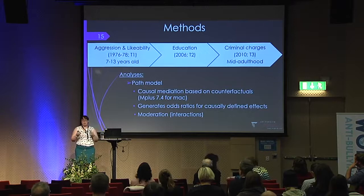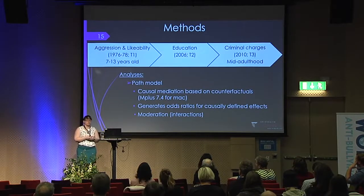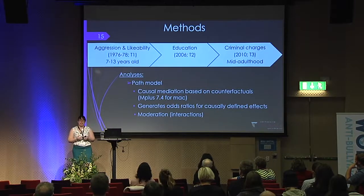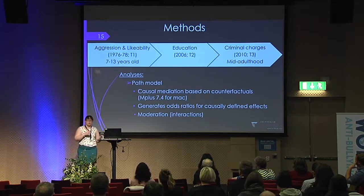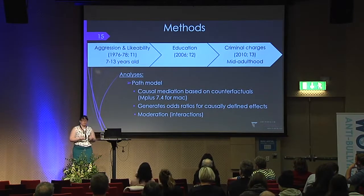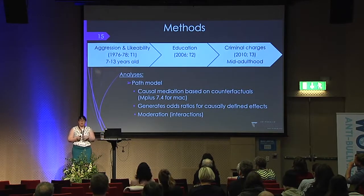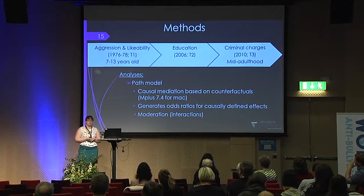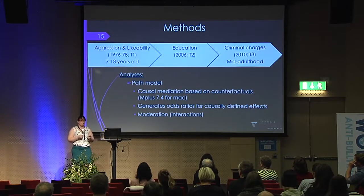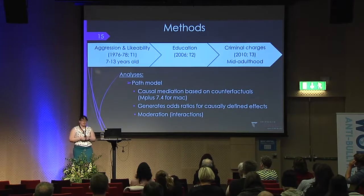In terms of the timeline for my measures: aggression and likability were collected between 1976 and 1978, when children were about 7 to 13 years old. Education was collected around 2006, and criminal charges in 2010. For my analyses, I used a PATH model using causal mediation based on counterfactuals, which generates odds ratios for causally defined effects. I also used interaction terms to test moderation.